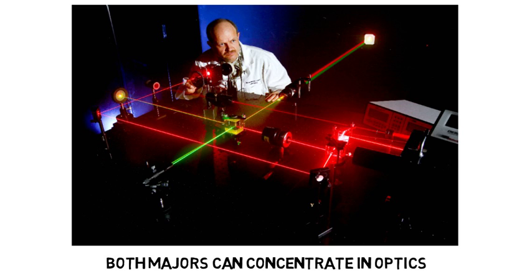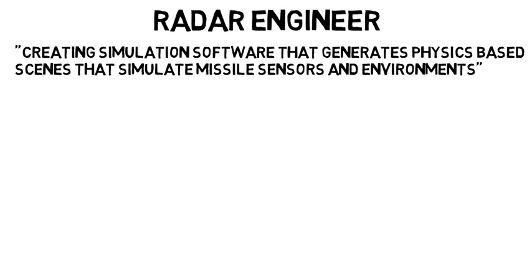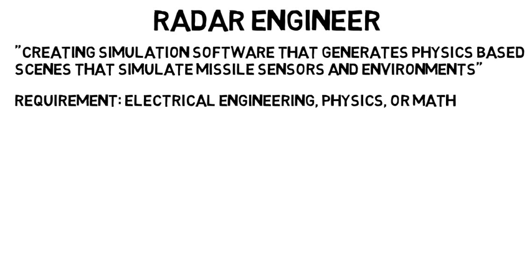There are also many jobs out there that have a list of degrees that candidates can have. For example, there's a job titled Radar Engineer. The job responsibility says creating simulation software that generates physics-based scenes that simulate missile sensors and environments. So it looks like there's knowledge of physics required, but also programming and software. The requirements for this job say electrical engineering, physics, or math. In fact, it's less common to find entry level jobs that require only a physics degree and won't take anything else.